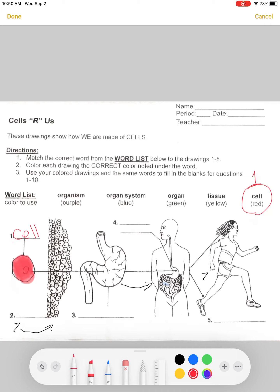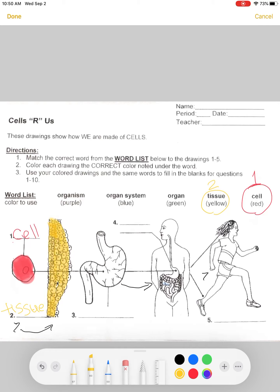The second thing we're going to do is write the word 'tissue' on line number two, because when you have the same type of cells grouped together, they become a tissue. We're going to color this tissue yellow — number two is yellow. And then when you have the same type of tissues working together, that becomes an organ.